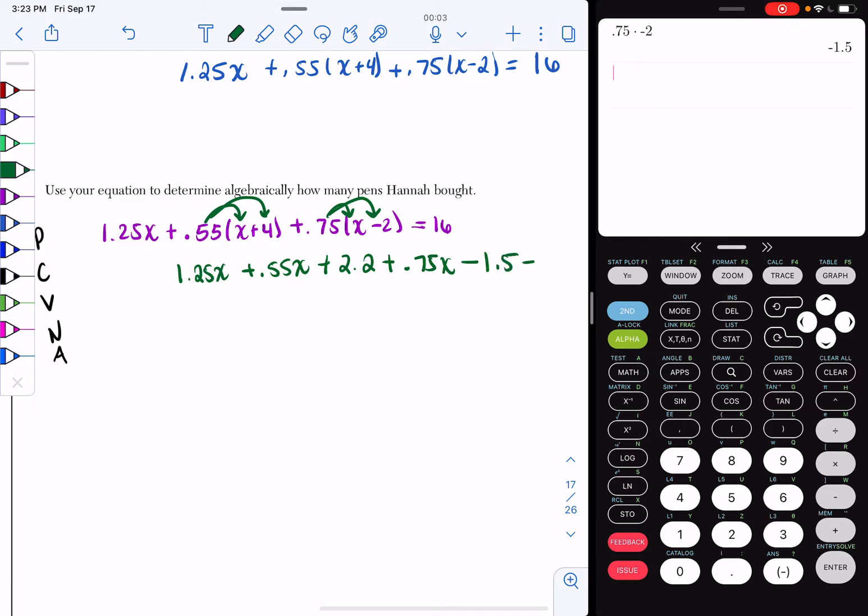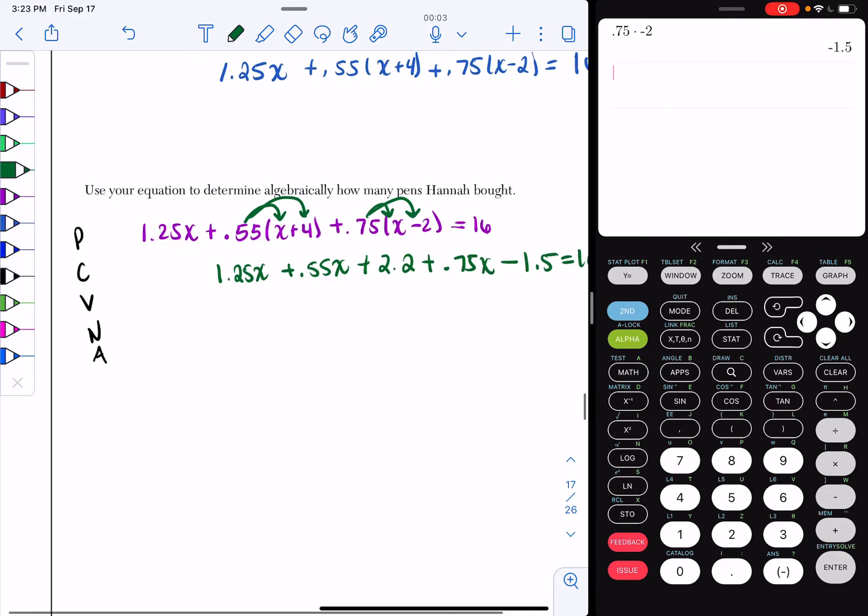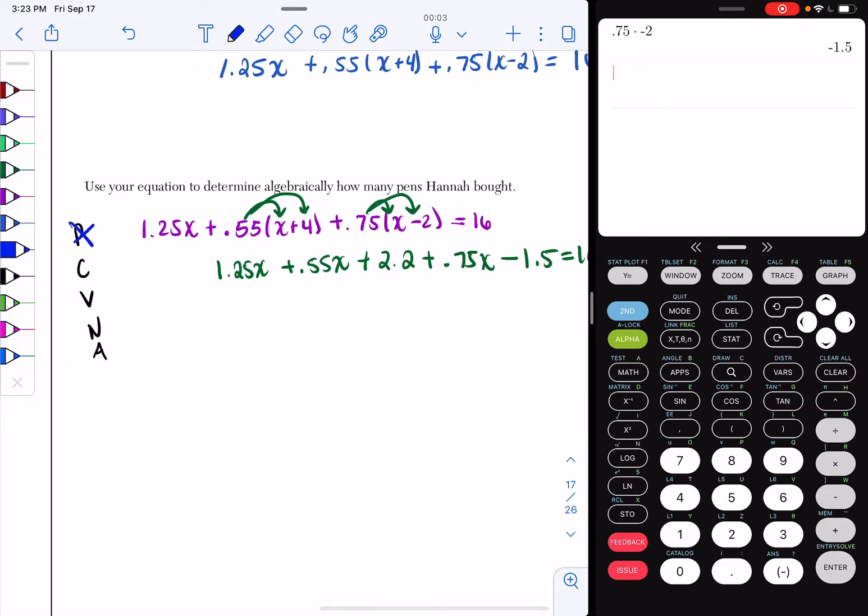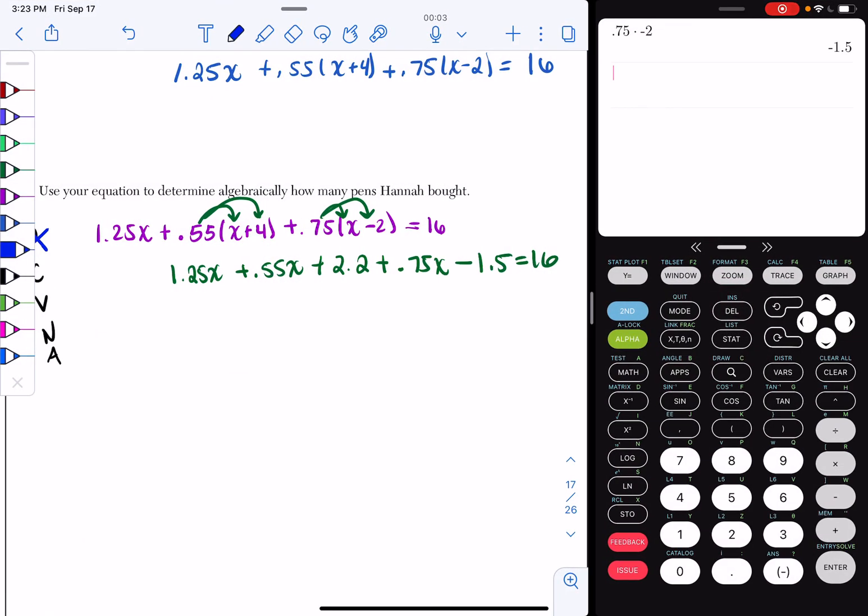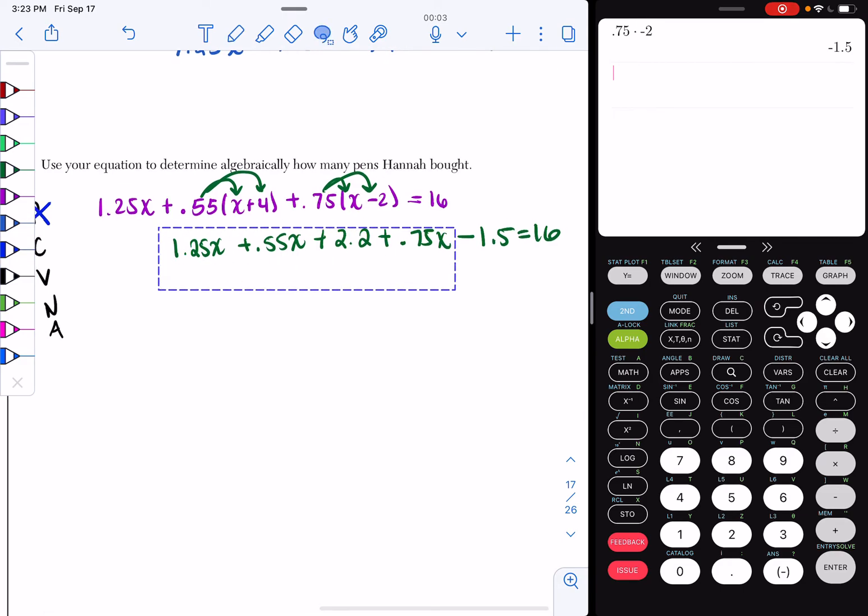Now, if you look, I've got no more parentheses. So now the C says combine those like terms. So I'm going to combine my like terms. X's with X's, numbers with numbers.